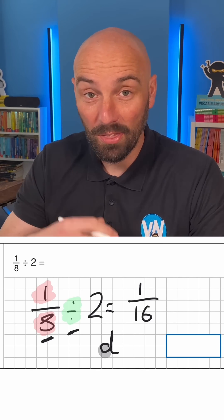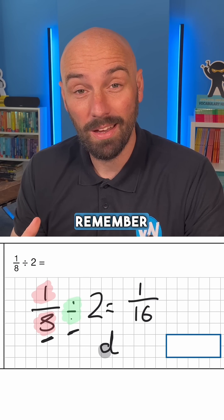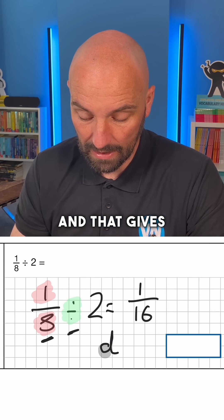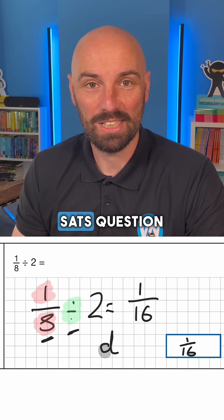We could go into the why, but ultimately for the arithmetic test we just need to remember that we're going to multiply the denominator by the whole number and that gives us 1 over 16. Very simple, and that's another SATs question solved.